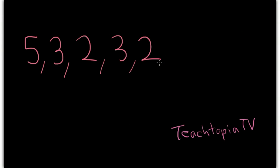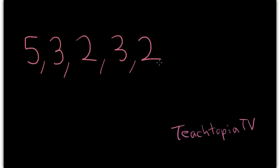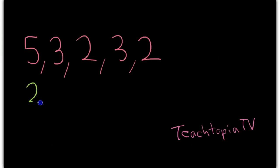Now, whenever you're given a set of numbers and being told to find the mean, median, mode, or range, you need to put that set of numbers in sequence from least to greatest. So let's go ahead and do that right now, in order from least to greatest: 2, 2, 3, 3, and 5.